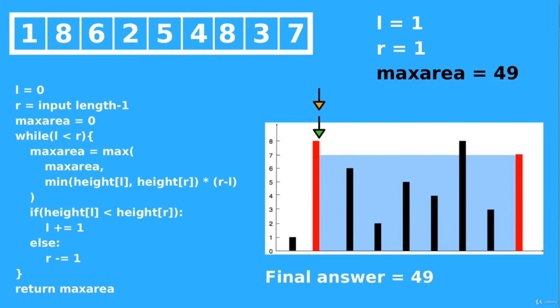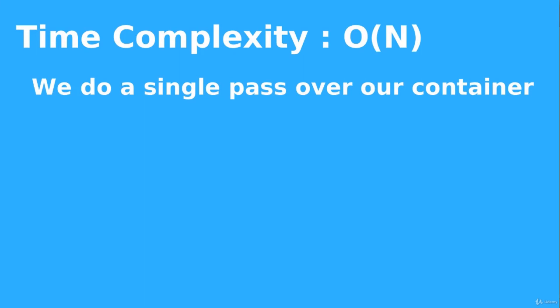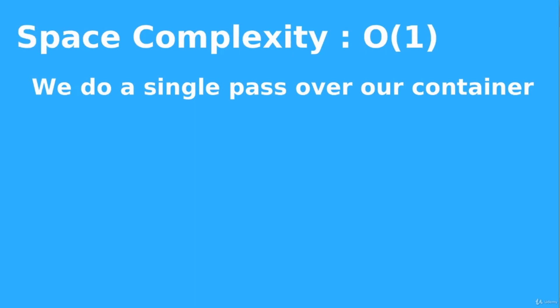The time complexity is O(n) because we do a single-pass loop over the input using two pointers. The space complexity is O(1) — we never used any external data structures, just a couple of pointers, and nothing stored that relates to our input size. In the next video we'll actually implement this — see you then.